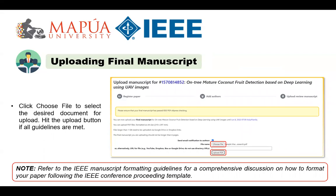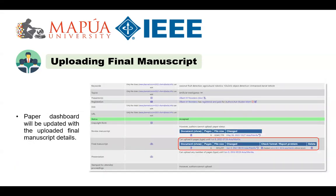To upload the final manuscript, click the Upload button after selecting the desired PDF document. Here are the final manuscript guidelines: you can upload PDF files formatted as A4 size, 210 by 297 mm. Files larger than one gigabyte need to be uploaded via Google Drive or Dropbox links. My files were less than one gigabyte. The final manuscript should not be longer than six pages — I stuck to six pages. More pages or additional pages will incur additional fees. Your paper dashboard will update to display the completion of the final manuscript submission once successfully submitted.